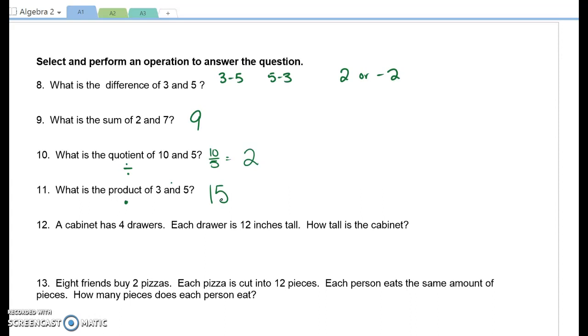Number 12. A cabinet has four drawers. Each drawer is 12 inches tall. Four drawers, 12 inches per drawer. If you can say per, it's probably multiply. So four times 12, that is 48 inches.